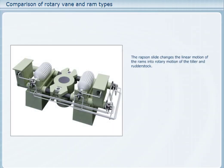On the ram type, the piston or ram is connected to the tiller, often through a rapson slide, which changes the straight line motion of the rams into rotary motion of the tiller and rudder stock. This means that ram type steering gears require more space than rotary vane types, and the working angle is limited compared with the rotary vane steering gear.